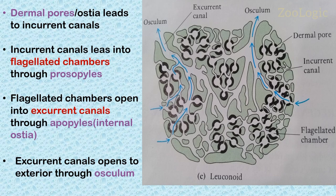In leuconoid sponges, water enters the dermal pores on the body surface and passes through a system of incurrent canals, eventually reaching the flagellated chambers through prosopyles. Since leuconoid sponges have no spongocoel, the water leaves the body through converging excurrent canals, which are developed as a result of the shrinkage and division of the spongocoel. The flagellated chambers are connected with excurrent canals through apopyles, and finally the water is driven out of the excurrent canals through the osculum.